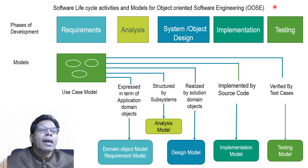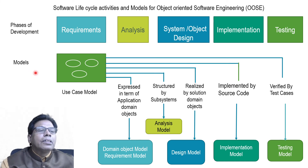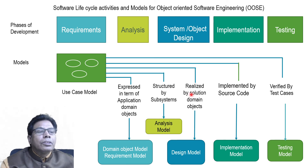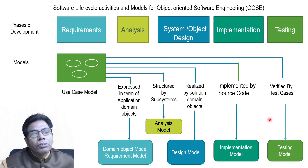Regarding software lifecycle activities and models for object-oriented software engineering: we have already discussed the phases — requirements, analysis, system and object design, implementation, and testing. The use case model is expressed in terms of application domain objects in the requirement model or domain object model. The use case model is used for structuring subsystems in the analysis model. The use case model is realized by solution domain objects in the design model. Then we have the implementation model which implements the source code, and finally the testing model where the use case model is verified by test cases.